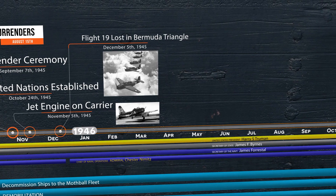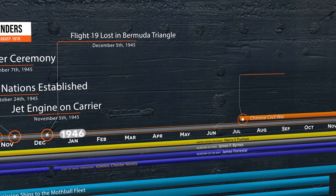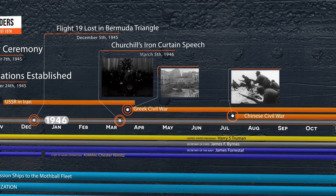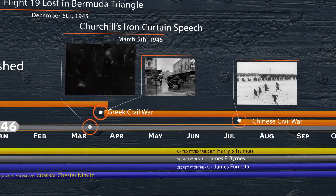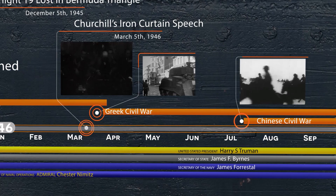1946 was the first full year of peace after World War II. Around the world, the civil war in China between the nationalists and the communists continued. The civil war in Greece continued. The USSR refused to withdraw its forces from Iran. In March, Churchill gave his famous speech: 'An Iron Curtain has descended across the continent. From Stettin in the Baltic to Trieste in the Adriatic, an Iron Curtain has descended across the continent. And there is nothing for which they have less respect than for weakness, especially military weakness.'